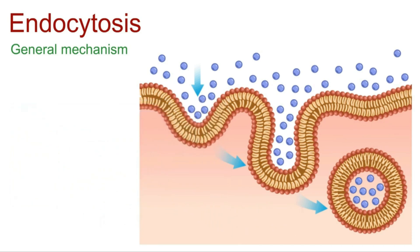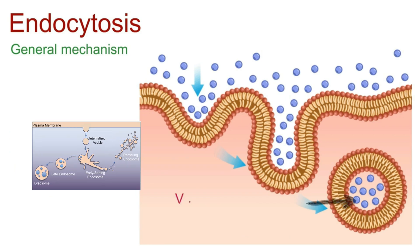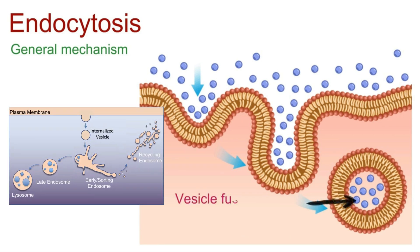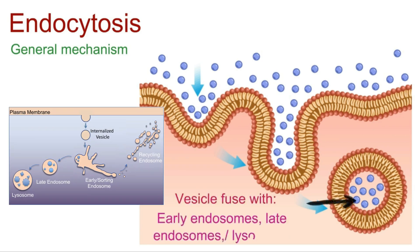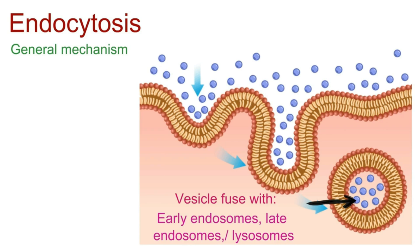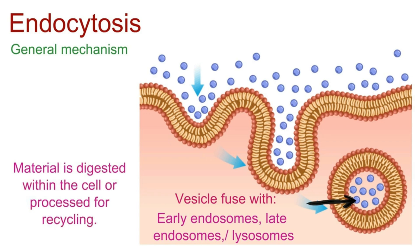The vesicle containing the internalized material is transported into the cell's interior. Depending on the type of material taken up, the vesicle may fuse with early endosomes, late endosomes, or lysosomes. In some cases, the material is digested within the cell or processed for recycling.